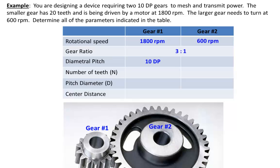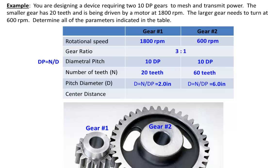If we want the gears to mesh, both need to have the same size teeth — so if the smaller gear has 10 DP teeth, the larger gear must also have 10 DP. The smaller gear has 20 teeth, and to obtain the 3 to 1 gear ratio, the larger gear needs to be three times larger and therefore have 60 teeth. Using the diametral pitch equation, the pitch diameter of the smaller gear is 2 inches, and the larger gear is 6 inches in diameter — three times bigger than the smaller gear.